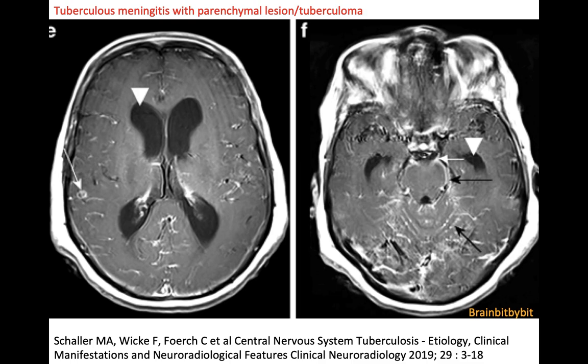Tuberculous meningitis, which occurs in, among others, HIV patients who have an increased risk of extrapulmonary TB, also gives a basal meningitis, with extensive enhancements along the basal cisterns and in the infratentorial compartment.